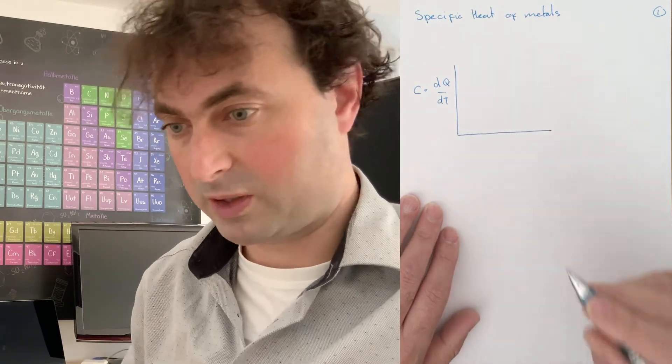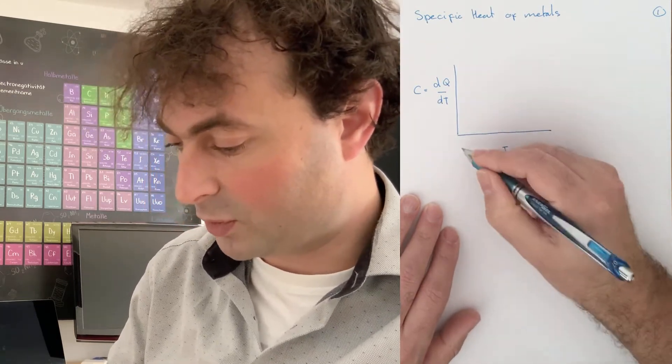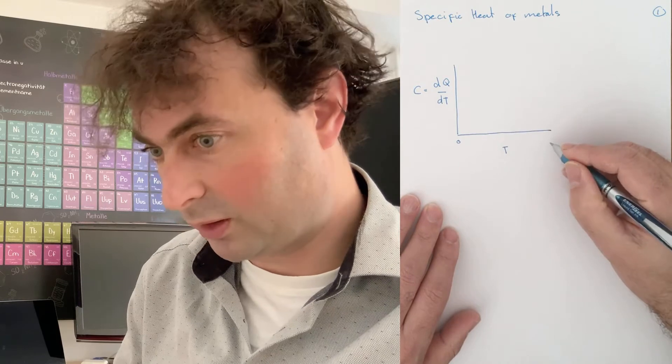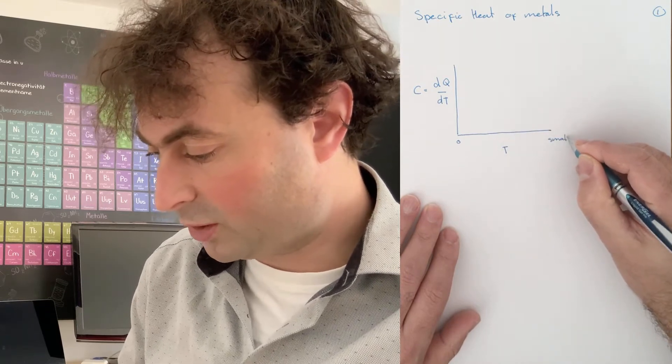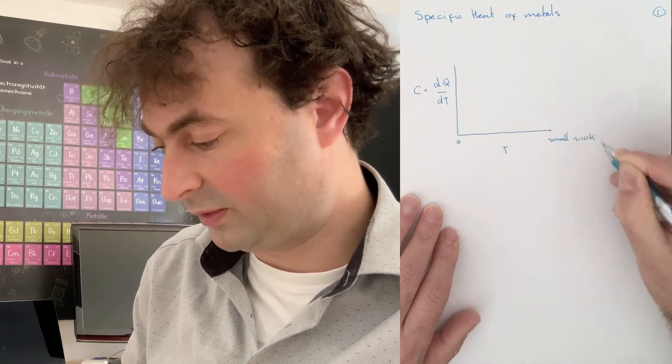If we make a plot of the specific heat as a function of temperature going from zero to something small, something of the order of 10 Kelvin,